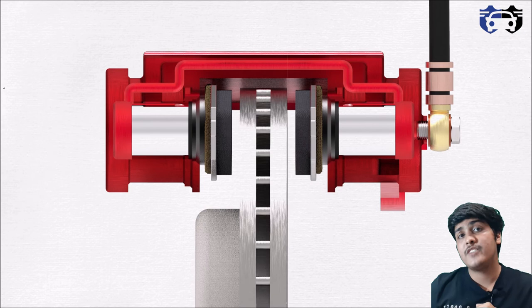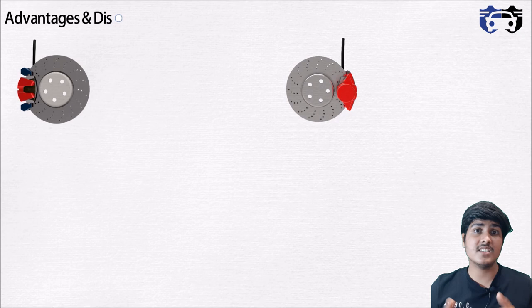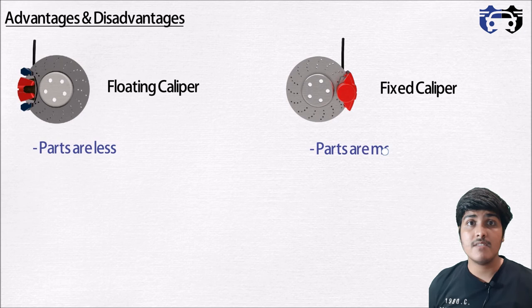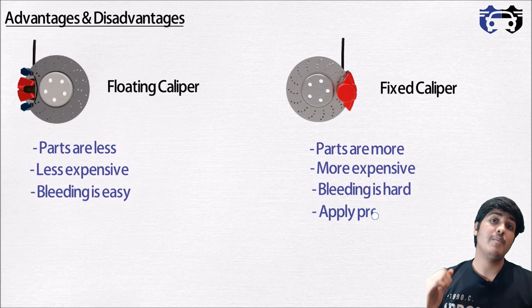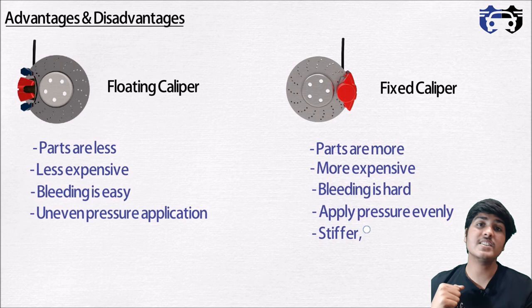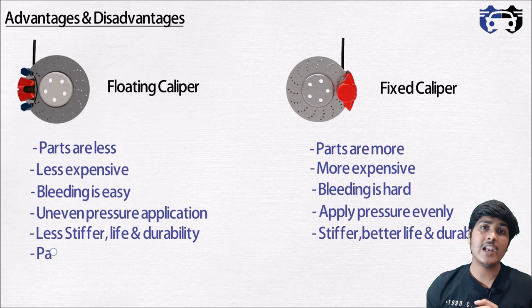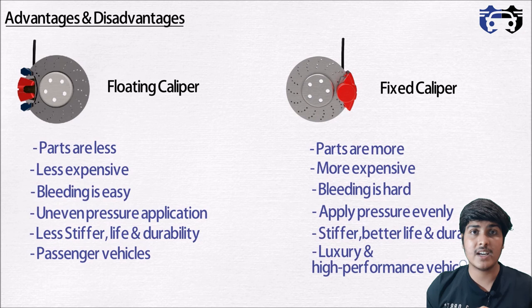Both fixed and floating calipers are used in different situations with some advantages and disadvantages. Floating calipers have fewer parts, making them less expensive, while fixed calipers have more parts and a more complex structure, making them more expensive. Floating calipers are easier to bleed than fixed calipers. Fixed calipers apply more even pressure on both sides of the disc rotor, are stiffer, and have better life and durability. Floating calipers are generally used in passenger cars, while fixed calipers are used in luxury cars and high-performance vehicles.